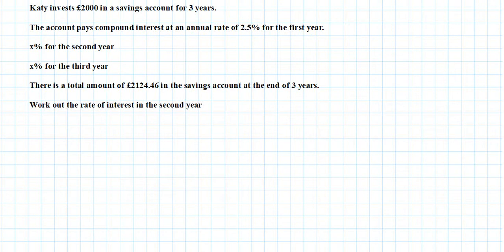Work out the rate of interest in the second year. So because there's a variable rate, the rate is changing, I'm going to use the year-on-year method. So what I'm going to essentially do is increase the principal, which was £2000, by a specific percentage for that year, year-on-year.